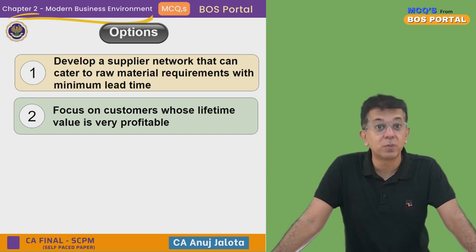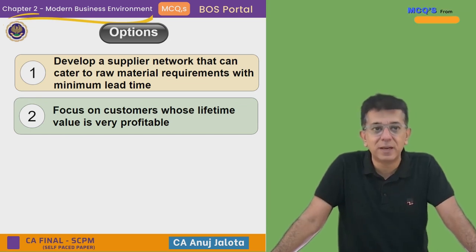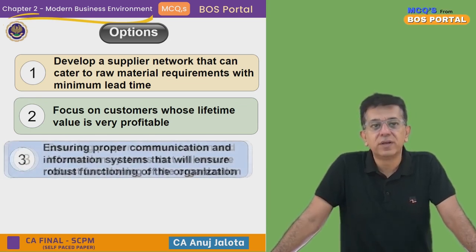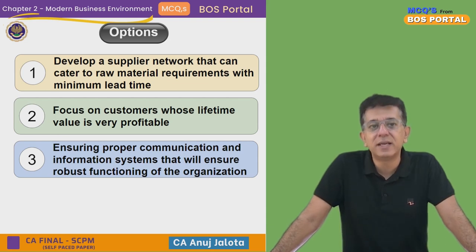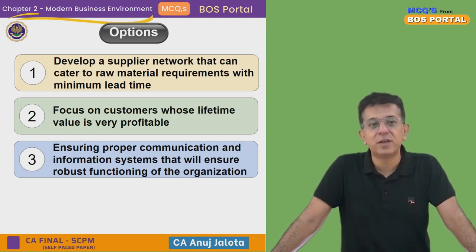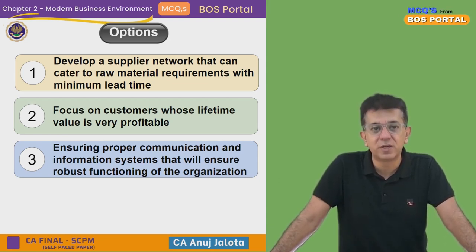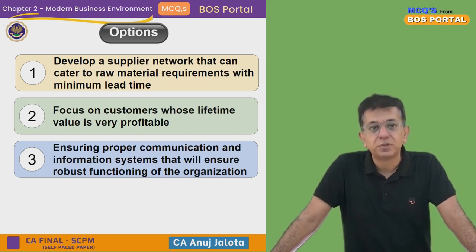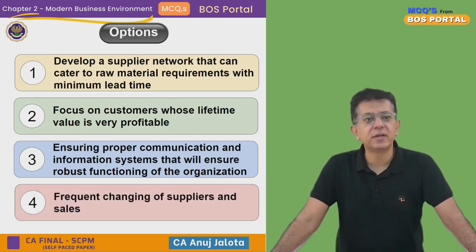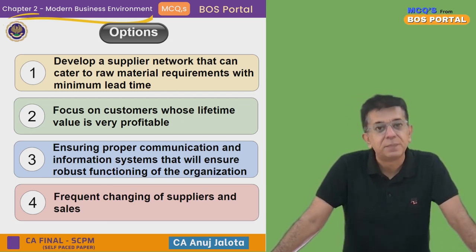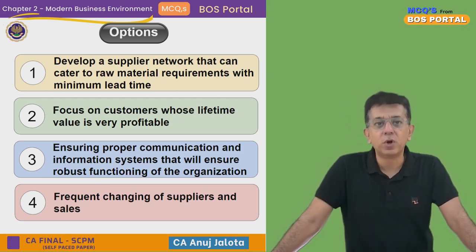For companies, lifetime value matters a lot because it shows how good your products are — otherwise why would a customer buy again? Option C is: ensuring proper communication and information systems that will ensure robust functioning of the organization. Option D is: frequent changing of suppliers and sales.